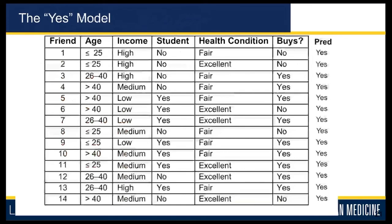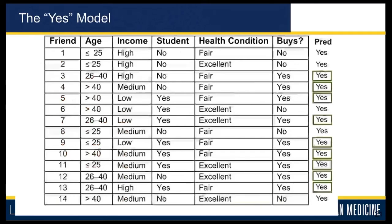Now you can see how well this particular classifier is. You already have the actual labels in the buys column, and you have the predicted label. Only a few match. For the third friend, they bought insurance and the predicted model also said yes — correct. But for the first and second friends, they actually did not buy insurance, so those are error cases. If you count up, nine instances out of 14 matched the actual label.